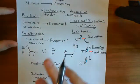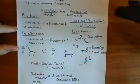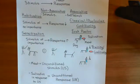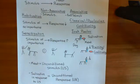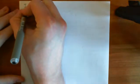Within non-associative procedural learning we have two types of learning: habituation and sensitization. In associative procedural learning we also have two types. We have classical Pavlovian conditioning, in which an individual learns to pair two stimuli together. And now what we're going to turn our attention to is the second form of associative procedural learning, which is known as instrumental conditioning, or operant conditioning.